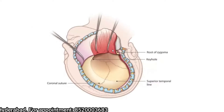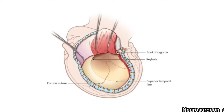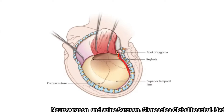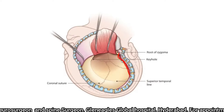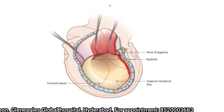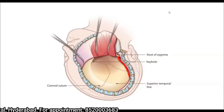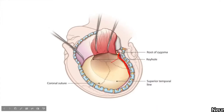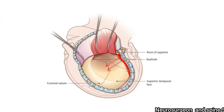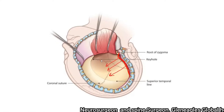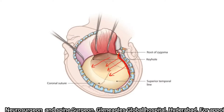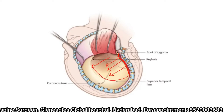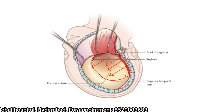Now you will have to deal with the temporalis muscle. We incise the temporalis muscle either with a knife. I prefer to incise with a monopolar along the posterior edge of the incision as shown in the picture. Once I incise, I use a periosteal elevator to separate the muscle and then use a narrow periosteal elevator to separate the temporalis muscle from the bone.